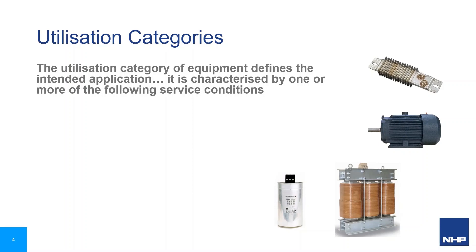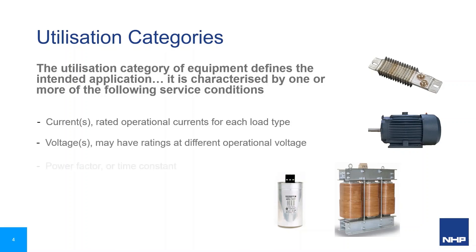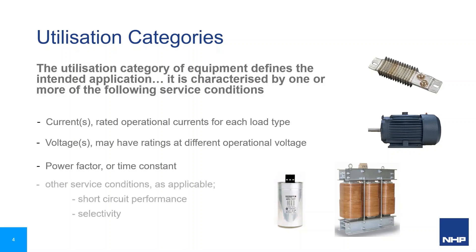With each load type having a different current profile during making and breaking operations, different utilisation categories are prescribed for major load types for on and off switching functionality. A device can be suited for different applications, hence can have different rated operational current values for different utilisation categories. A device's operational current for a utilisation category may also be different at different operational voltages. There are categories for AC switching and for DC switching. A switchgear device usually has ratings stated for several utilisation categories for the different applications, with different rated operational current values.